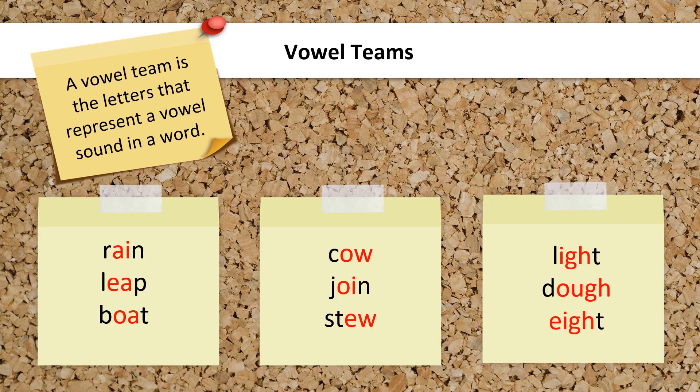The purpose of this module is to use syllabication rules to read multisyllabic words with vowel teams. So, of course, before students can read multisyllabic words, they must be introduced to each of the vowel team spellings and sounds and be very proficient in reading single-syllable words.